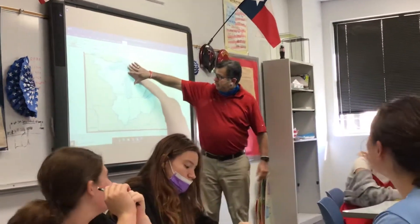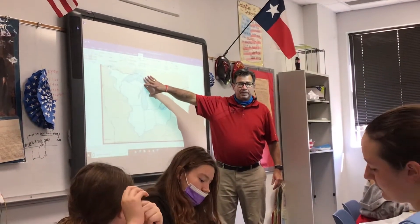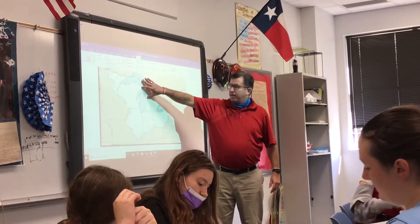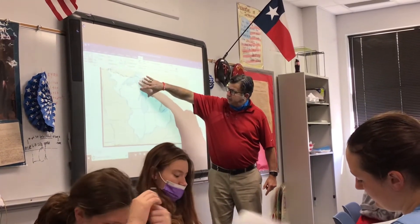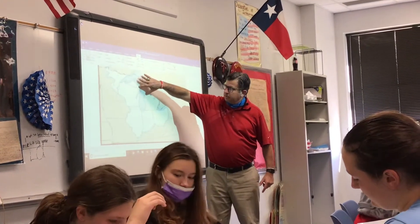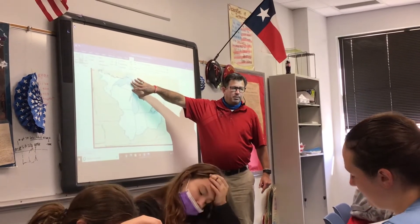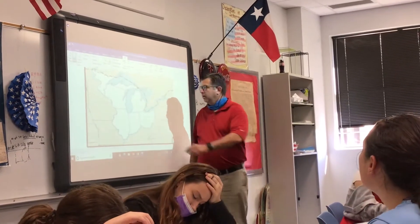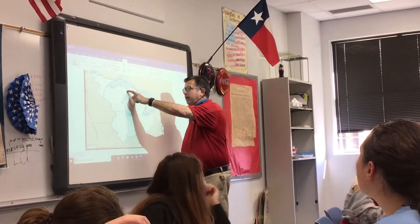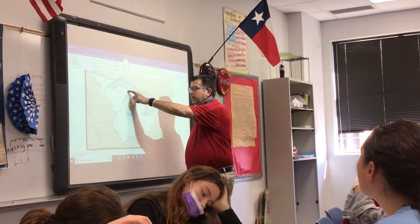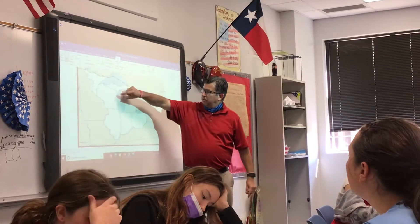Moving here — this is Michigan. It's in two places, divided by Lake Michigan. This is Michigan here, and this is Michigan here — two spots for Michigan. The abbreviation is MI. WI for Wisconsin, MI for Michigan.